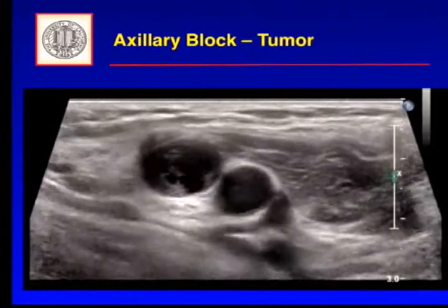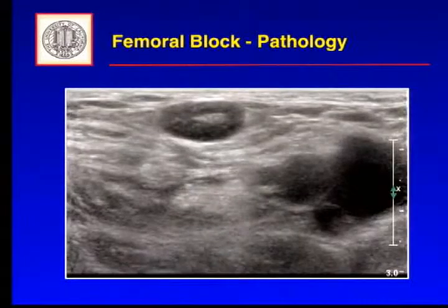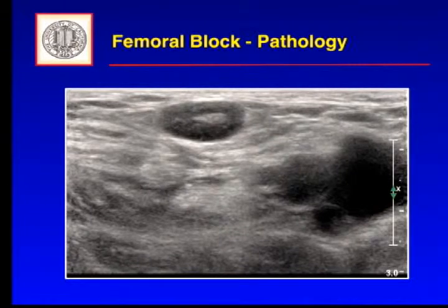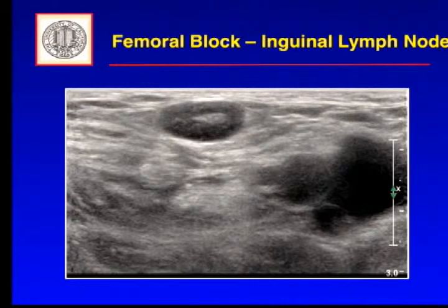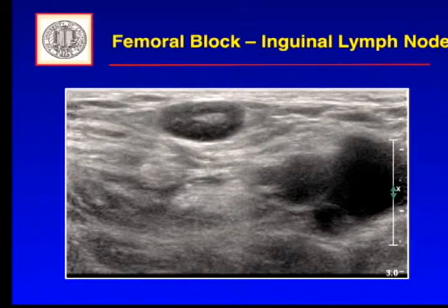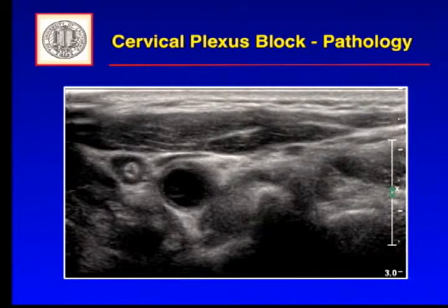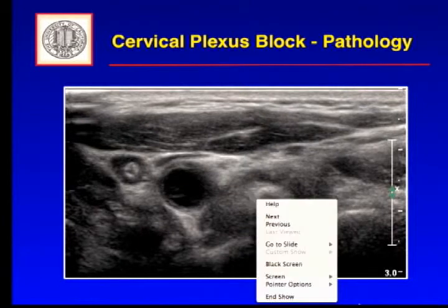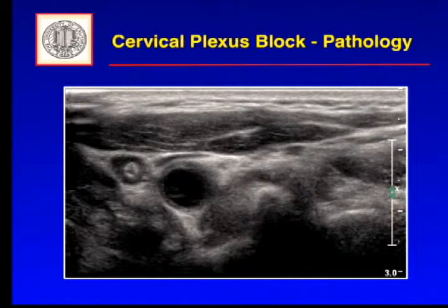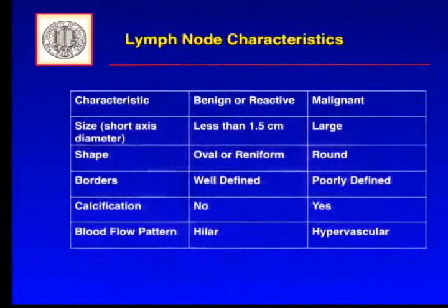For this femoral nerve block, you can see an inguinal lymph node very nicely. The lymph node is not round — it's more oval, sometimes reniform in shape. You can see the hilum in the middle and it's not too large. Here's another one during a cervical plexus block, a bit more concerning with some internal echoes. I do a lot of cervical plexus blocks for thyroid surgery, so we come up with a lot of findings on those scans.